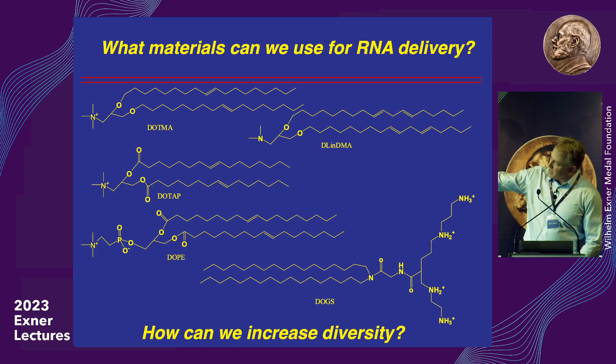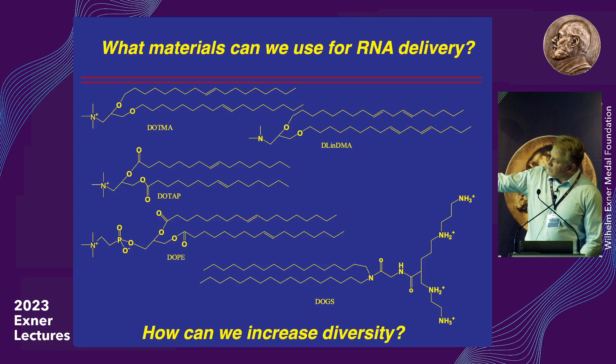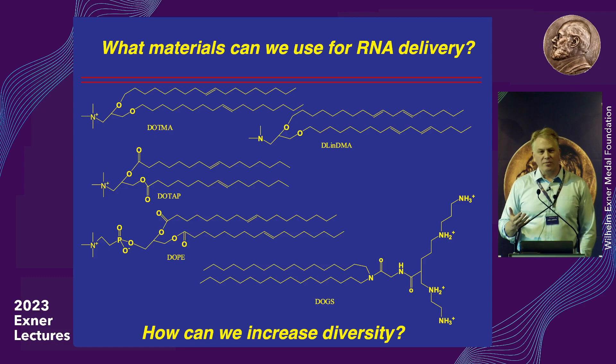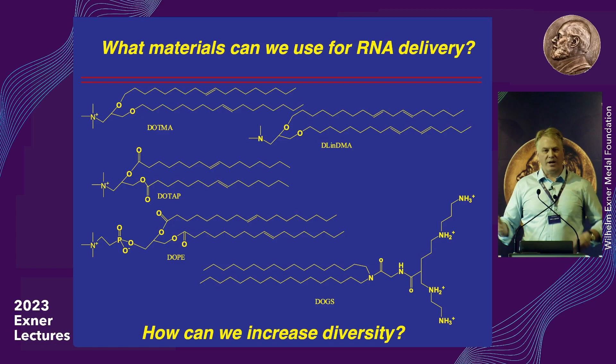For example, the lipid DOTMA in the top left was developed in the 1980s — one of the early delivery materials for DNA and antisense molecules. The material DLIN-DMA was a very important early delivery material used to show the potential of small interfering RNA, published in Nature around 2006. If you're a chemist, you might notice these structures differ by only a few atoms — not to take away from their importance, but the first challenge was making diverse molecules, which was really a chemistry challenge.